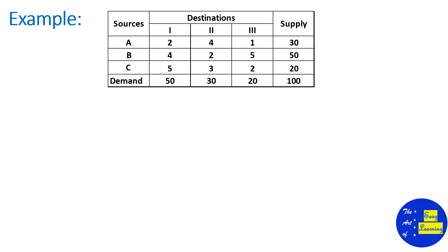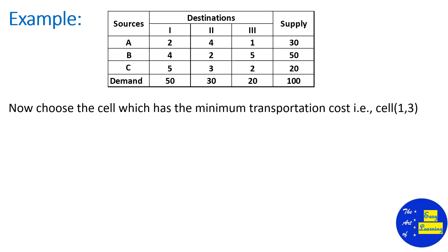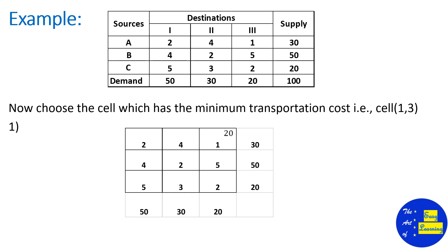Now choose the cell with the least cost value. In the table we can observe that cell (1,3) has the least cost, that is 1. We have to allocate the maximum possible quantity to this cell, which is 20. So we allocate 20, and with 30 in the first row, the third column will be cancelled because the demand of 20 is satisfied.